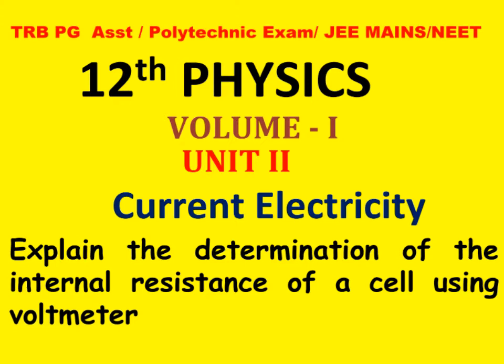Explain the determination of the internal resistance of a cell using a voltmeter. Before starting the question, we want to know what is meant by internal resistance. Internal resistance is a property of the main source.